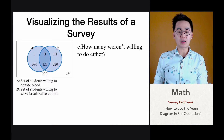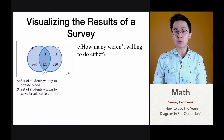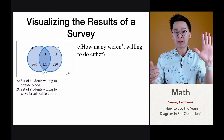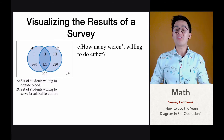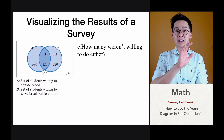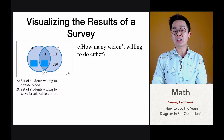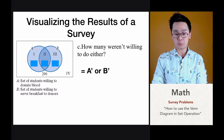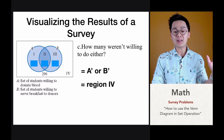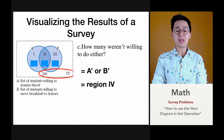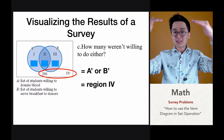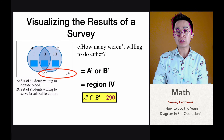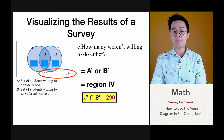For the third survey problem, we want to find how many students weren't willing to do either task — donating blood or serving breakfast. We're not going to include students in group one and two from set A, nor the students in group three from set B. We are counting the complement of A union B, which is region four — outside set A and set B but still included in the union set. That means 290 students weren't willing to do any of the tasks.